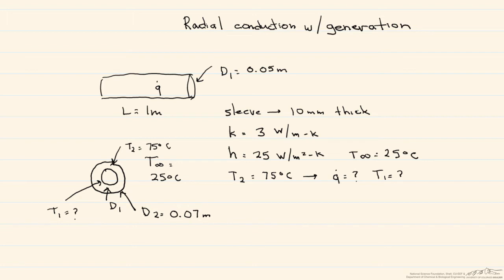It has a thermal conductivity equal to 3 watts per meter K. And then the outer surface is exposed to air with a heat transfer coefficient of 25 watts per meter squared K. And the temperature of the surrounding air, the bulk temperature or T infinity, is 25 degrees C. If the outer surface is at a temperature of 75 degrees C, what we want to know is what is our Q-dot as well as what is our T1.